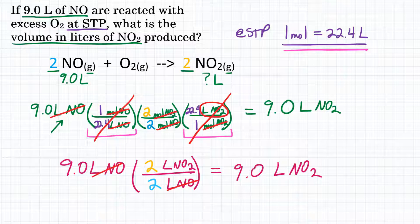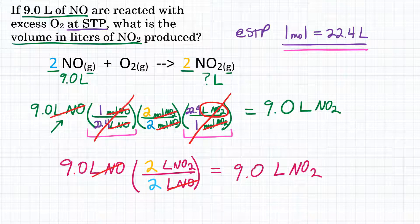So there you have it. Gas stoichiometry for going liters to liters. If 9.0 liters of NO react with excess O2 at STP, what volume in liters of NO2 will be produced? Well, that will be 9.0.